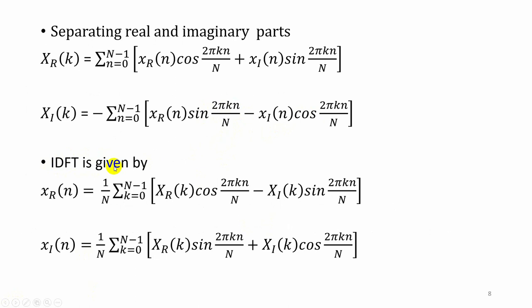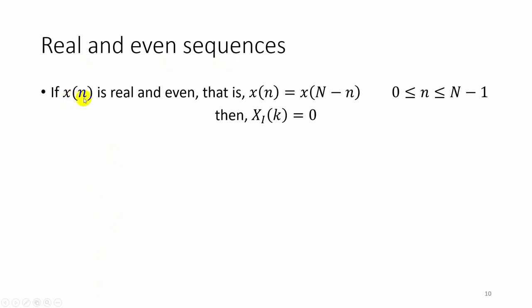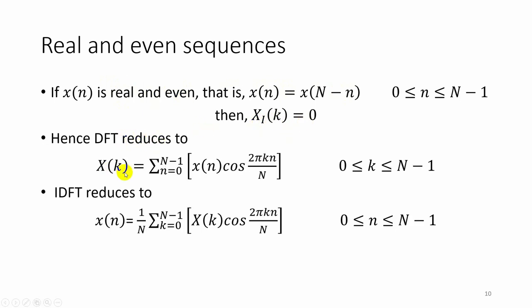Similarly we can find the inverse DFT. The inverse DFT is given by x of n equal to 1 by N times the summation from k equal to 0 to N minus 1 of X of k times e to the power j 2 pi k n by N. Instead of e to the power minus j we get e to the power plus j, giving cos theta plus j sin theta. If x of n is a real and even sequence, then x of n equals x of capital N minus n, and Xi of k equals 0. In that case the DFT reduces to only the cosine sequence, and the IDFT also reduces to the cosine term.